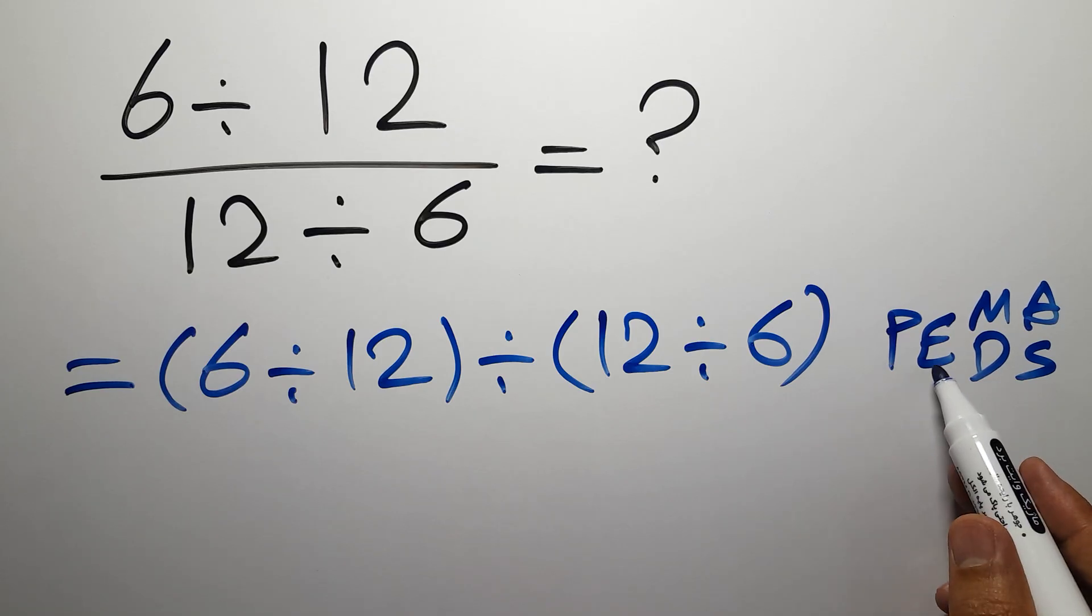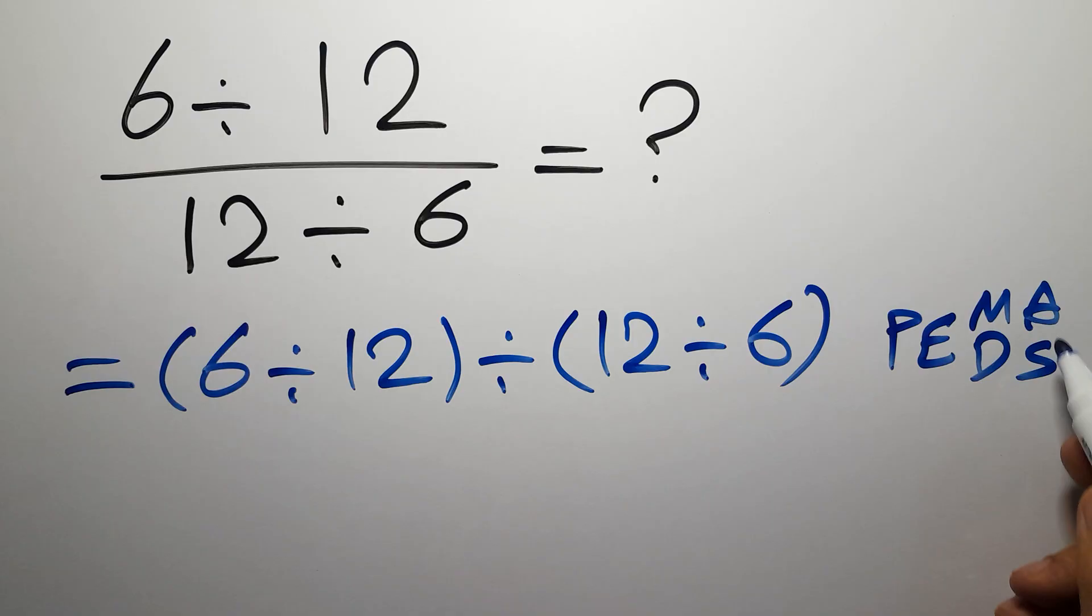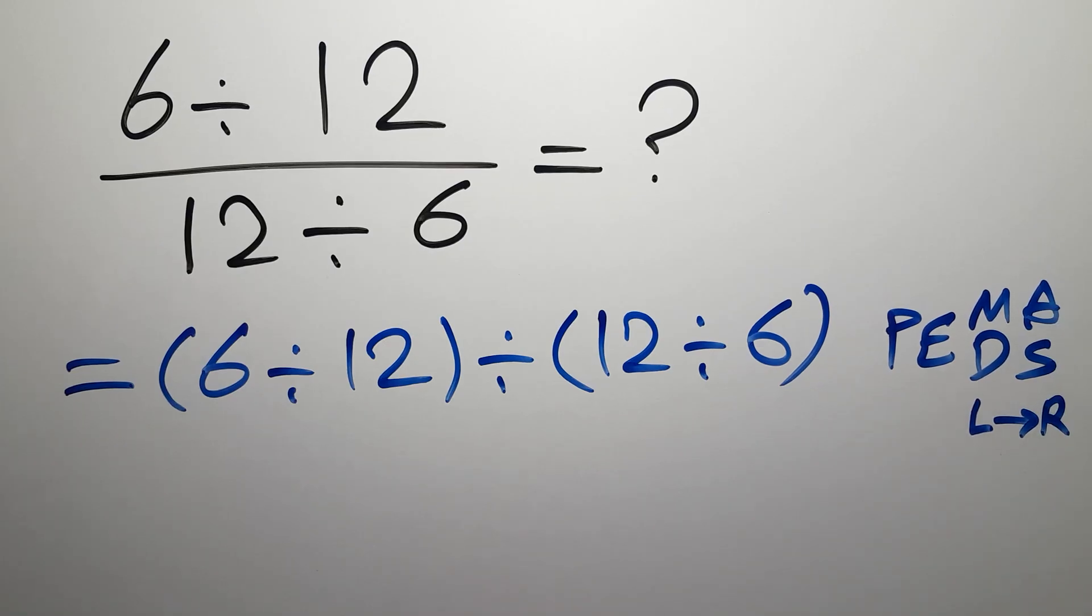First we have to do parentheses, then exponents, then multiplication or division, and finally addition or subtraction. Remember that multiplication and division have equal priority and we have to work from left to right, and the same applies to addition and subtraction.